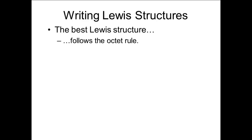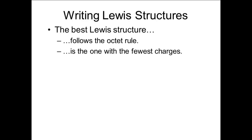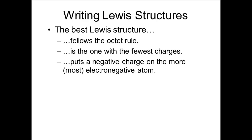A: It follows the octet rule — that is, eight electrons for each atom except hydrogen, which needs only two. B: It has the fewest charges — that is, the lowest numbers in the charges. And C: It puts the negative charge on the most electronegative element.